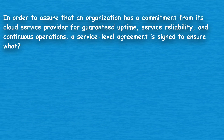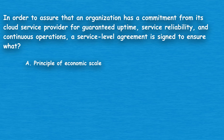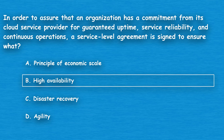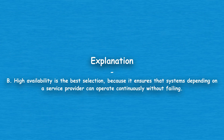The next question: in order to assure that an organization has a commitment from its cloud service provider for guaranteed uptime, service reliability, and continuous operations, a service level agreement is signed to ensure what? Option A: Principle of Economic Scale. Option B: High Availability. Option C: Disaster Recovery. Option D: Agility. The correct answer is Option B, High Availability. High Availability is the best selection because it ensures that systems depending on a service provider can operate continuously without failing.